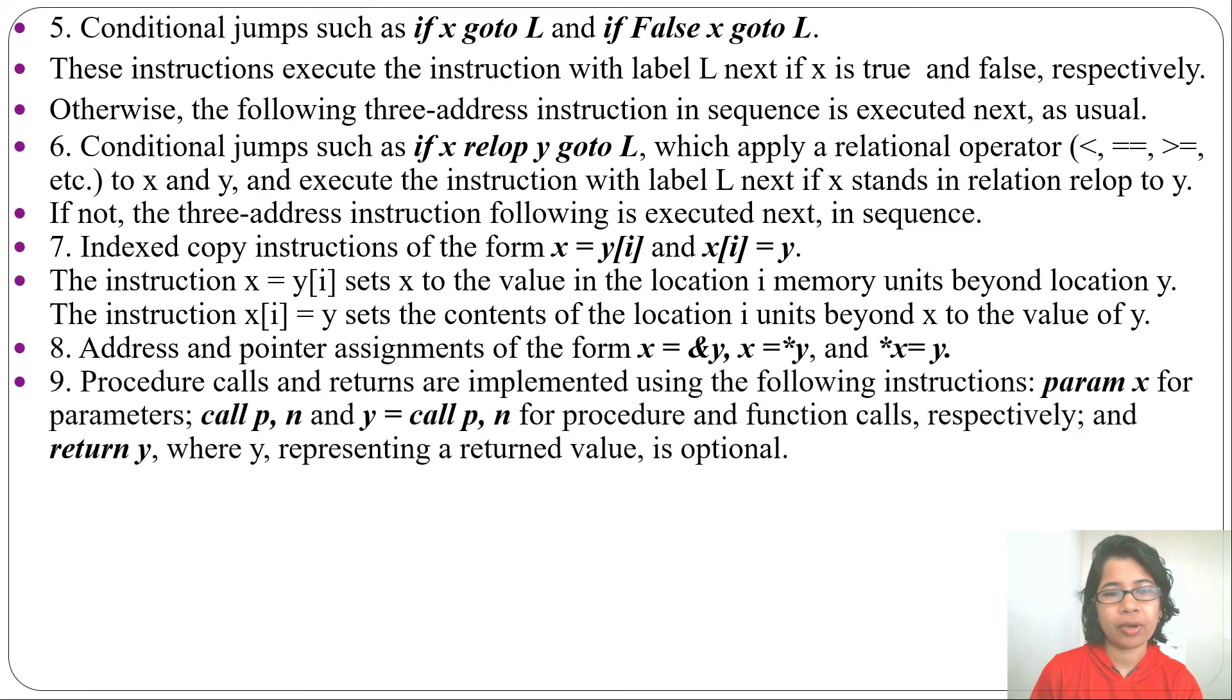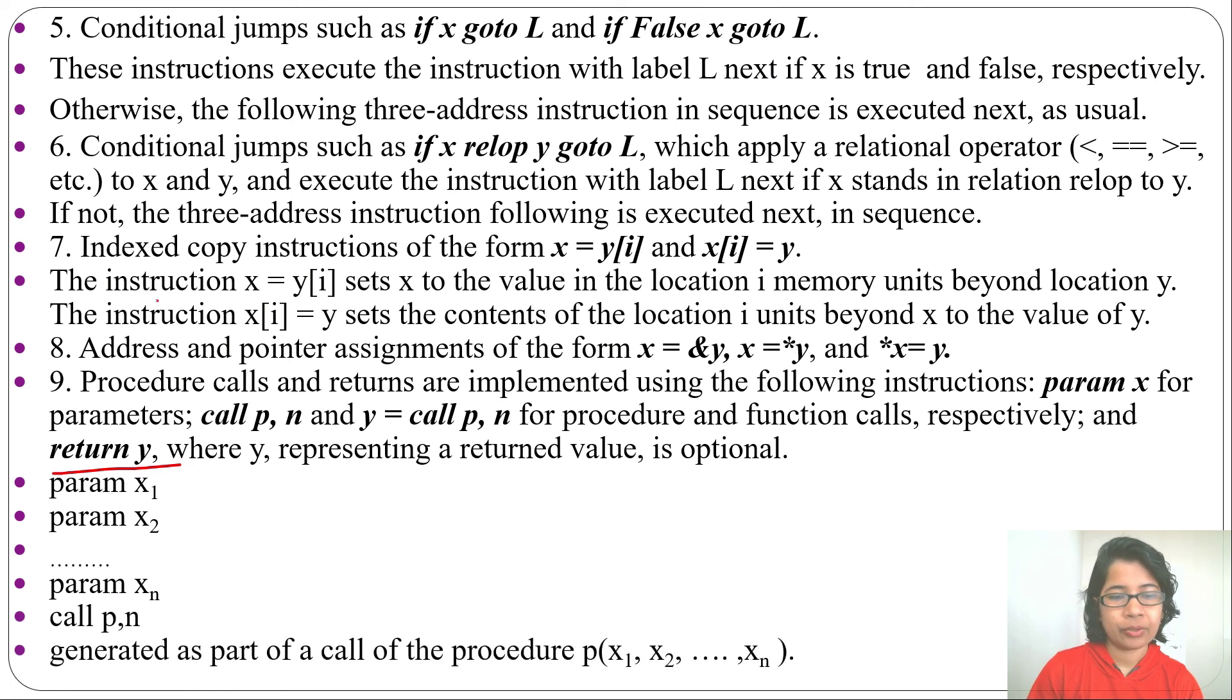Next, function call and procedure call can also be implemented in three-address code. Param x stands for parameter; call p or y = call p is for procedure and function call respectively. Return y will return the y value. For example, you can write param x1, param x2, up to param xn, call p. So it will be generated as part of a call of the procedure p with parameters x1 to xn.